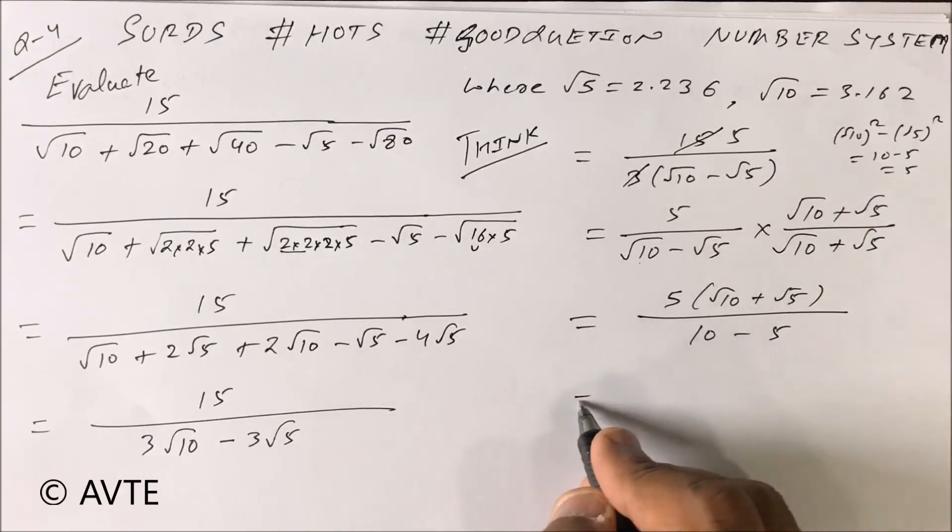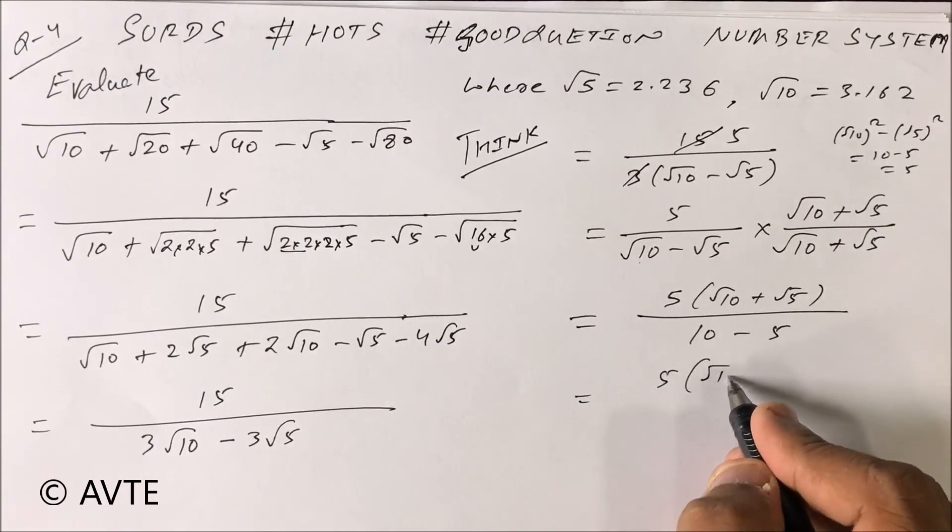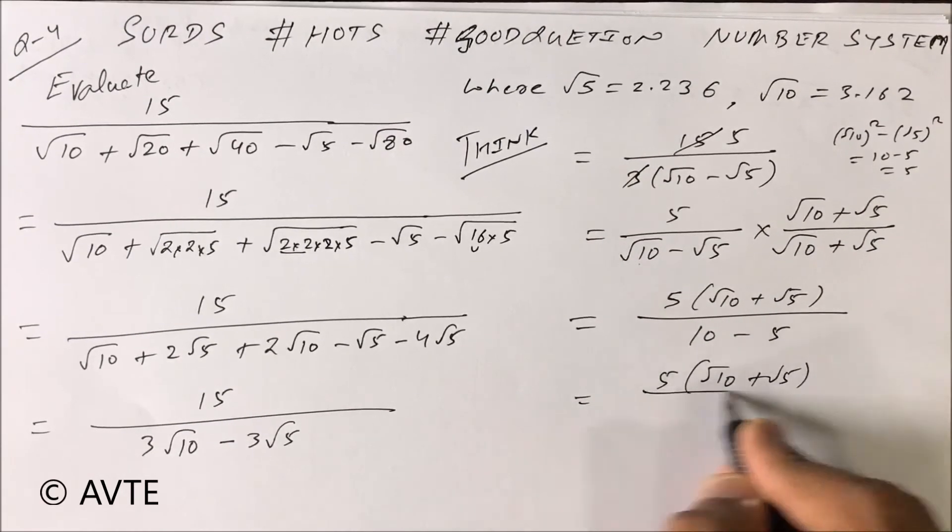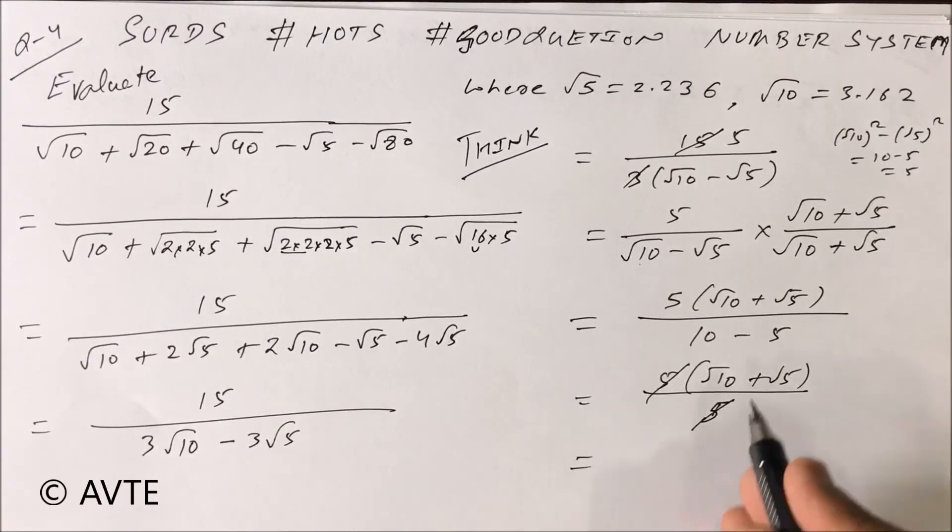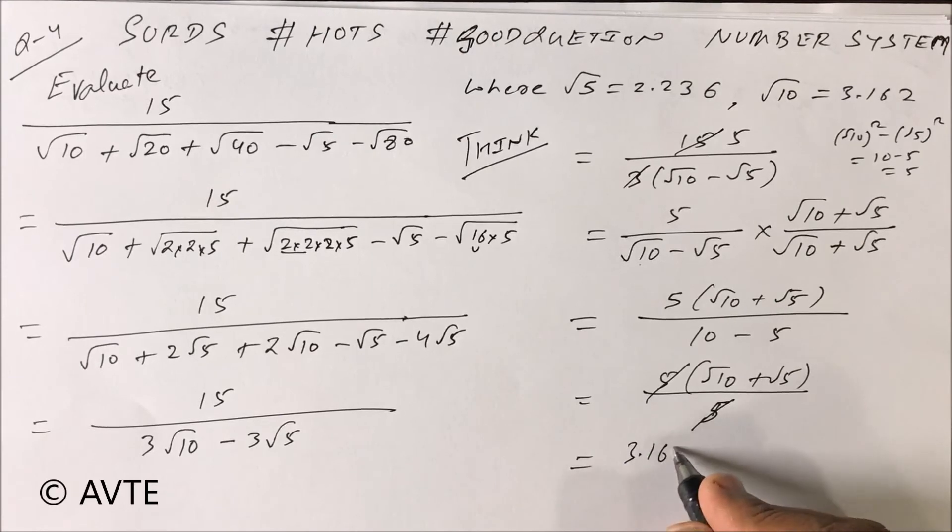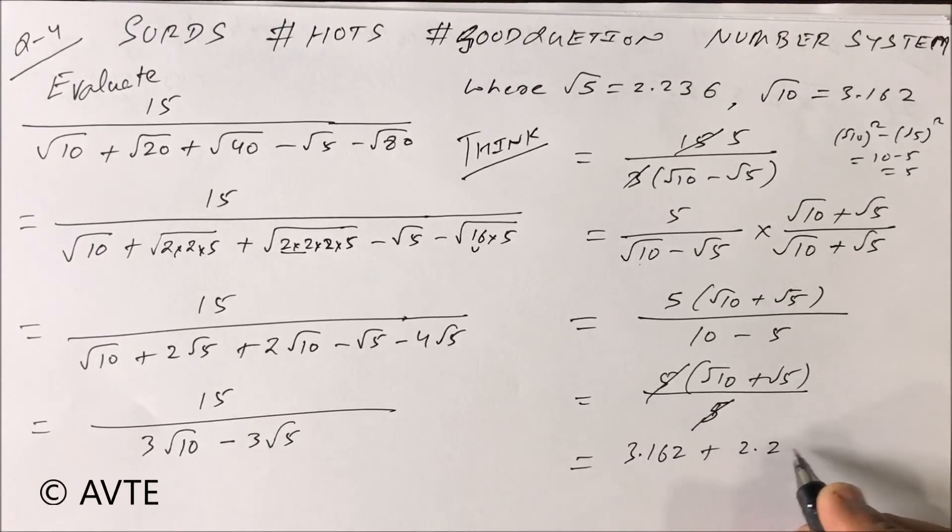That is 5, so that 5 will be cancelled with the numerator. This is your 5 and this will be cancelled. Root 10 is 3.162 and root 5 is 2.236.